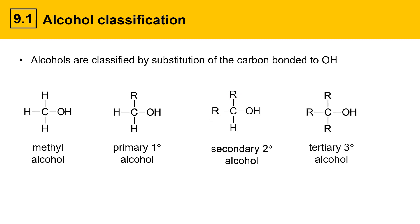And when there are three carbon groups attached to the carbon that has the OH, it's called a tertiary alcohol. The strategy is, find the carbon that's bonded to the OH group and count the number of carbon groups attached to it.